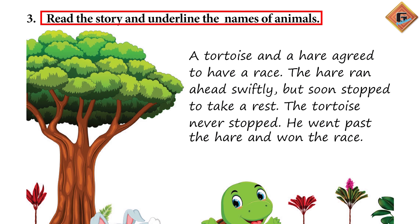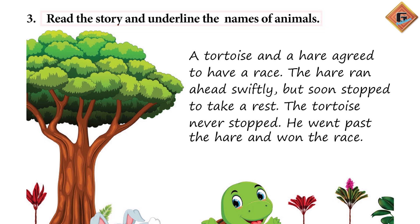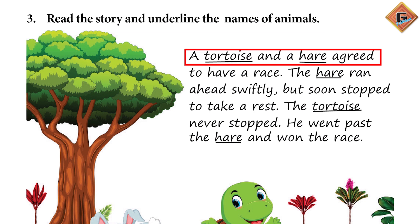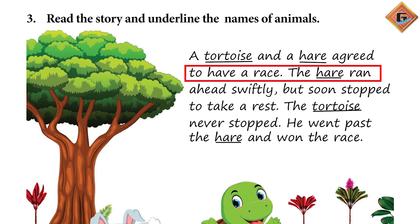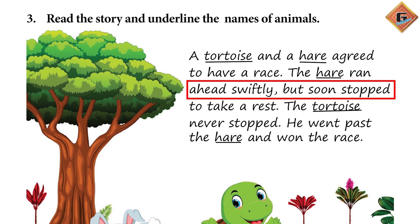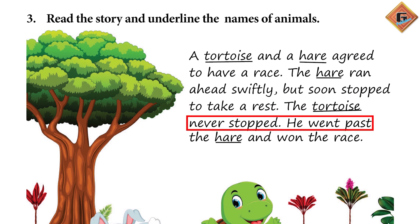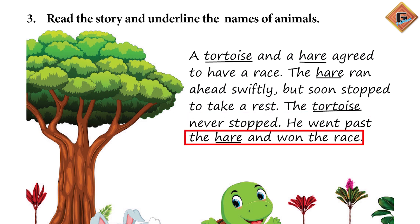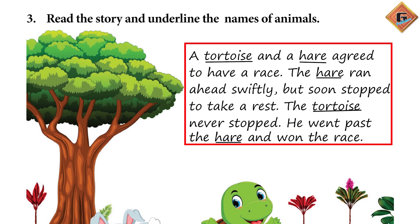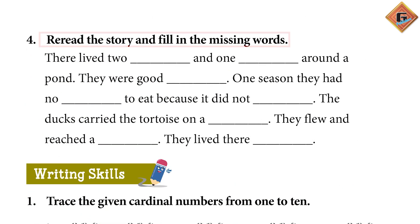Read the story and underline the names of the animals. Aap dekhenge ki jaise jaise screen peh hum story padhenge, jo animals ke naam honge woh underline ho jayenge. A tortoise — dekho ye underline ho gaya. And a hare — ye bhi aapka underline ho gaya. Agreed to have a race. The hare ran ahead swiftly but soon stopped to take a rest. The tortoise never stopped. He went past the hare and won the race. Screen ke upar, kitni dafah bhi tortoise aur hare ka naam aya hai, woh aapke paas underline ho gaya hai. Re-read the story and fill in the missing words — yahaan par jo story hai, isko padhte huye hamne missing words ko fill karna hai.